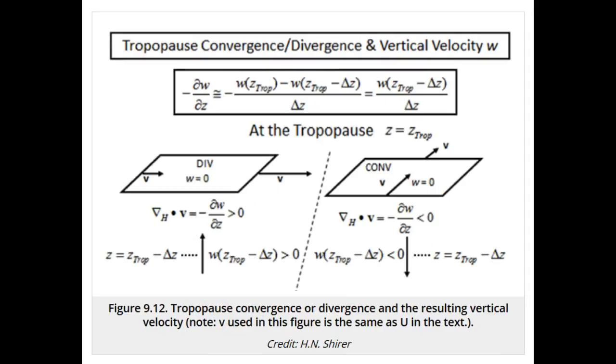At the tropopause, the rapid increase in stratospheric potential temperature acts like a lid on the troposphere and effectively makes w go to zero at the tropopause.